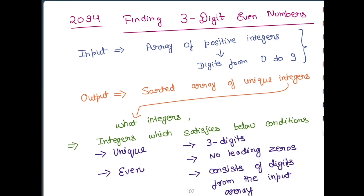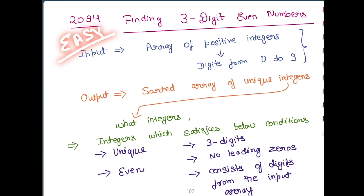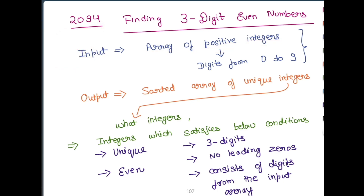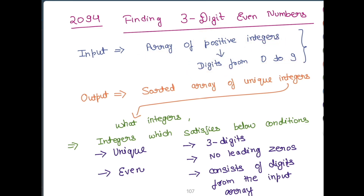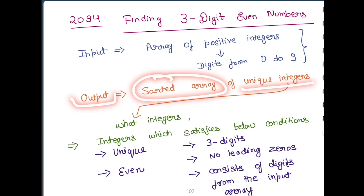In this video we are going to solve the LeetCode problem of the day: Finding Three Digit Even Numbers. The problem category is easy level, but it seems to be medium level. After watching this video and understanding the problem and solution approach, you are going to say it's actually very easy. The given input is an array of positive integers — digits from 0 to 9 — and you need to output a sorted array of unique integers.